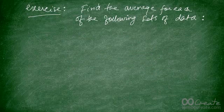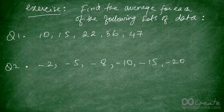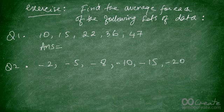Here's a quick exercise. Find the average for each of the following sets of data. Please press the pause button, finish your calculations, and then check your answers. The answer to the first question: the average is going to be the sum, so you add up all the numbers — 10, 15, 22, 36, and 47.